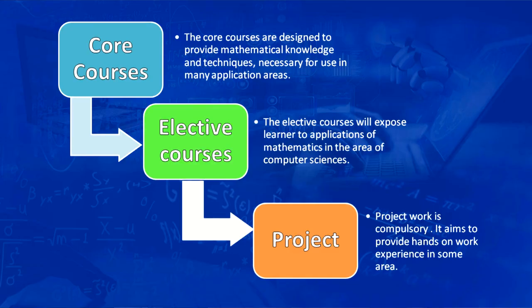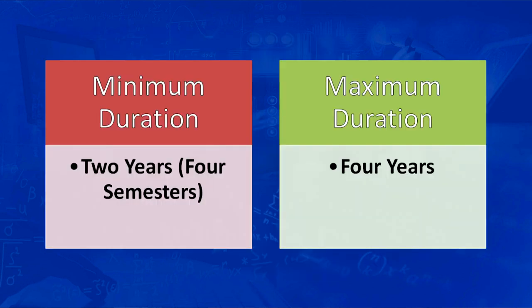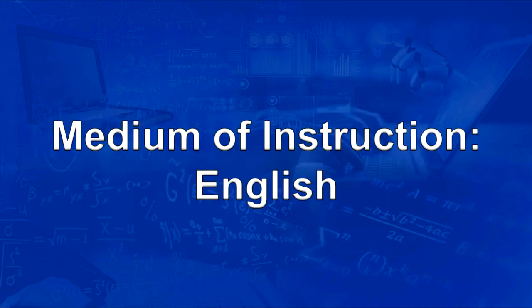Because of this close relationship, the program team has designed a curriculum that has a judicious mix of core mathematics courses and exciting elective courses on some of the current applications of mathematics in computer science. This program has 64 credits divided equally over four semesters. The medium of instruction is English.